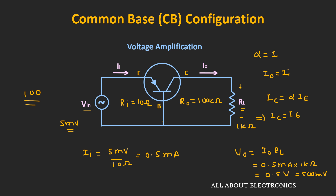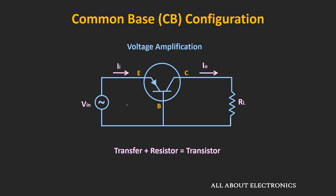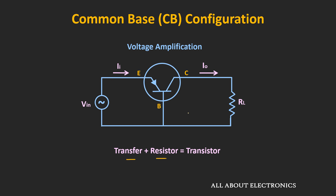The current gain — the ratio of collector current to emitter current — is less than 1 for this common base configuration. However, it provides voltage gain, typically ranging from 50 to 300. The same current is transferred from the input side to the output side — from a low-resistance circuit to a high-resistance circuit — and that is why the BJT was named a transistor.